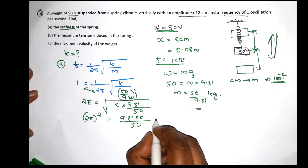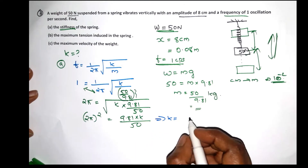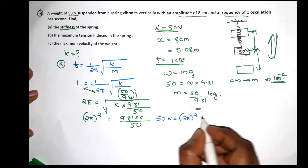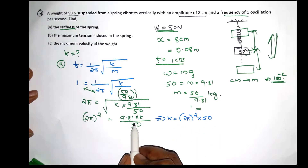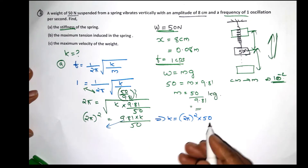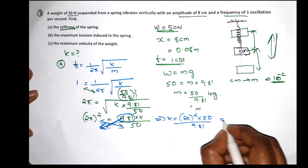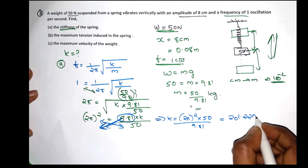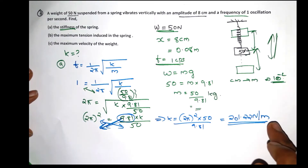Solving for k: k is equal to (2π) squared into 50, divided by 9.81. This gives us the stiffness value with the appropriate units of newtons per meter.